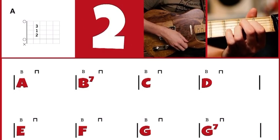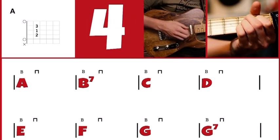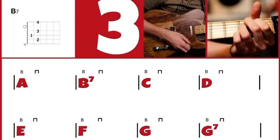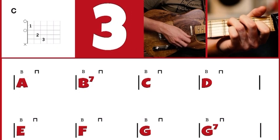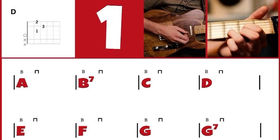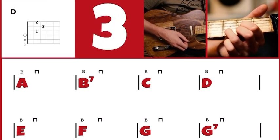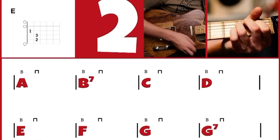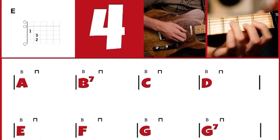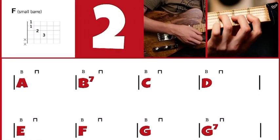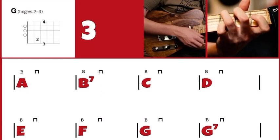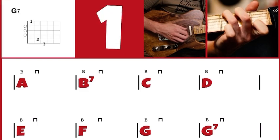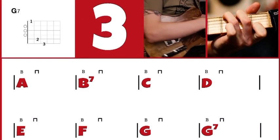A, two, three, four. B7, two, three, four. C, two, three, four. D, two, three, four. E, two, three, four. F, two, three, four. G, two, three, four. And G7, two, three, four.